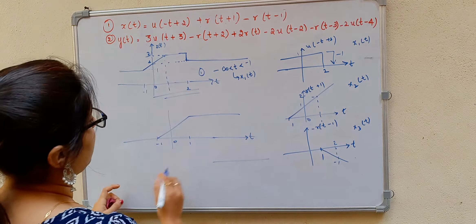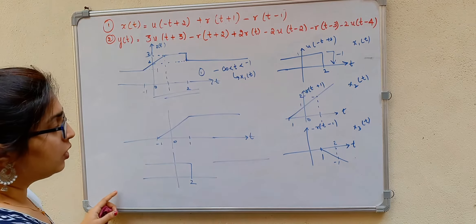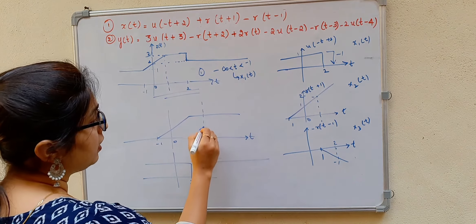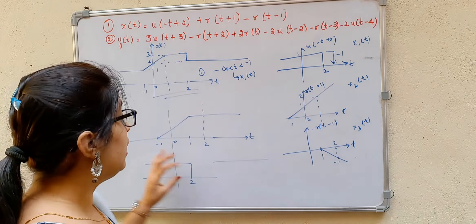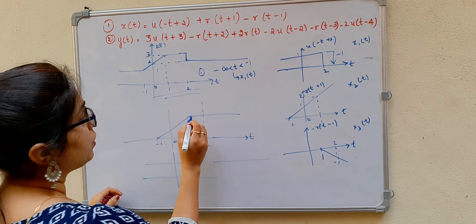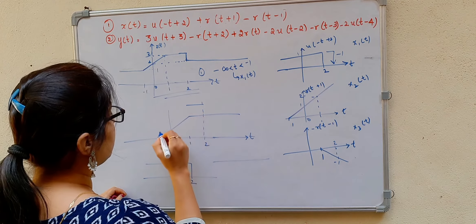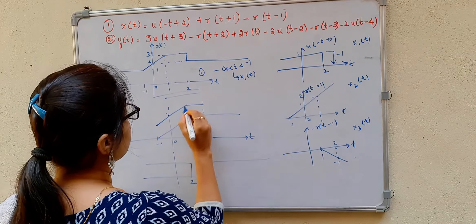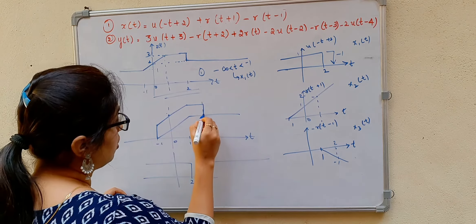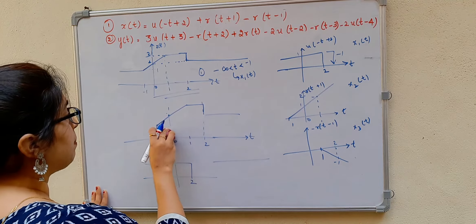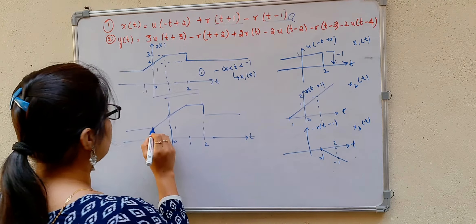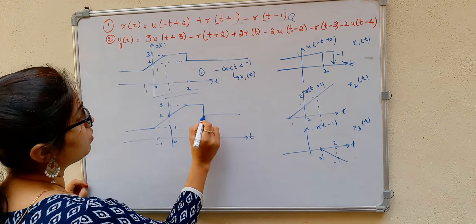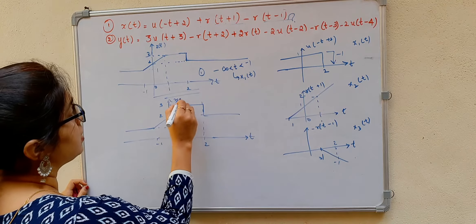Now take the effect of u(-t+2), which is active till t = 2. Adding these signals: from 2 to infinity it stays the same, but before 2 there is a vertical shift. The signal rises due to the step function contribution. Here at t = 1 it is 1, then 2, then 3. At t = 2, that is the value of 2. This is the signal x(t).